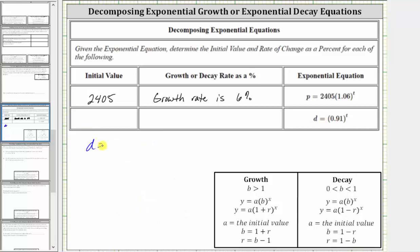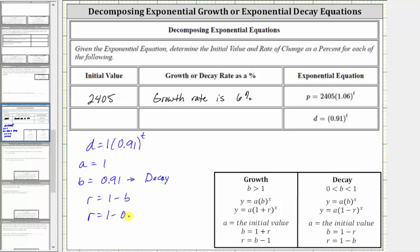The next equation is d equals 0.91 raised to the power of t. Notice how it doesn't appear as if there is a value for a, but of course we could put a one here and it's not going to change the values of d, and therefore a, the initial value, is equal to one. The base b is equal to 0.91, which is between zero and one, and therefore we have exponential decay this time. And because we have exponential decay, the decay rate r as a decimal is equal to one minus b. This gives us r equals one minus 0.91, which is equal to 0.09, which is 9%. So to complete the table, the initial value was one, and because we have exponential decay, the decay rate is 9%.